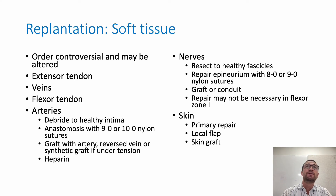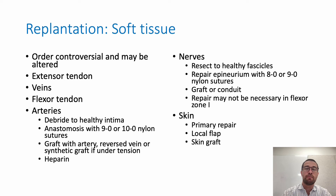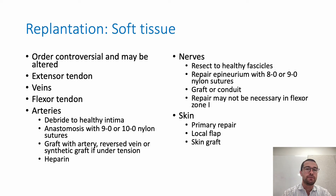Next are the nerves — they are resected to healthy fascicles and the epineurium is repaired with narrow nylon sutures. If there's too much of a gap, a graft or a conduit can be inserted. Some authors suggest that nerve repair may not be necessary for very distal amputations of digits, that being in flexor zone one. And finally, once all those structures have been addressed, the skin is closed — either with primary repair, or sometimes if there's too much damage, local flaps or skin grafts need to be used.